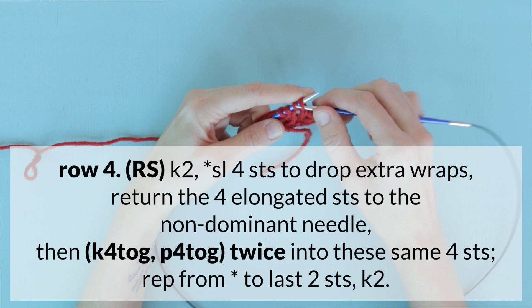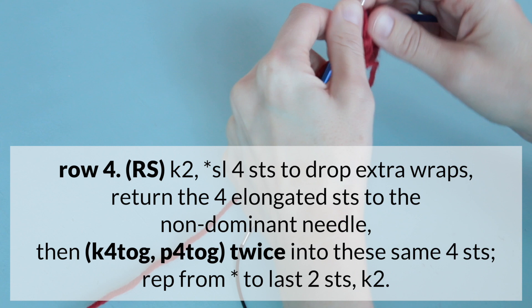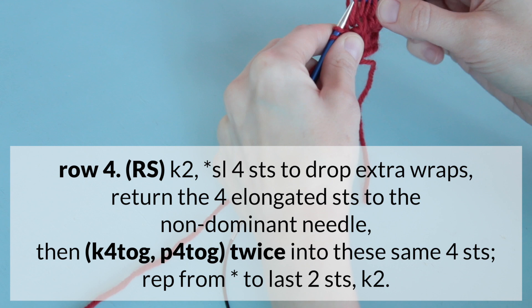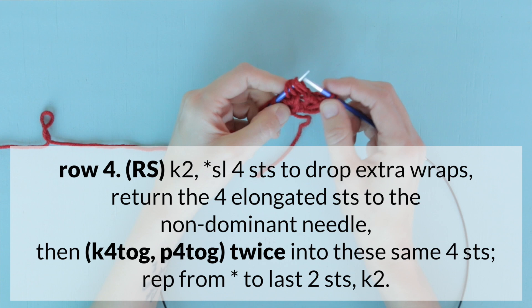By the way, in knitting, if they say slipping a stitch and they don't indicate whether it should be purlwise or knitwise, go ahead and assume it's purlwise, fun fact. Now we are going to sweep those elongated loops back to the left-hand needle before inserting our needle knitwise through all four loops at once.